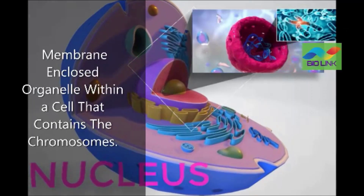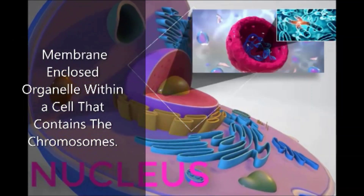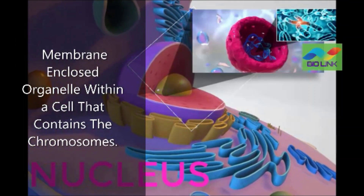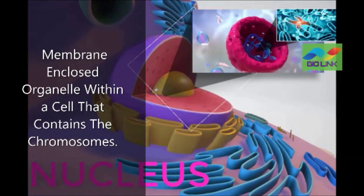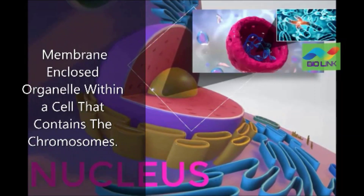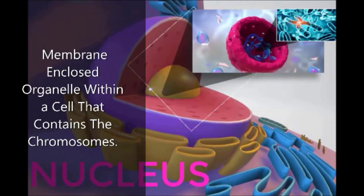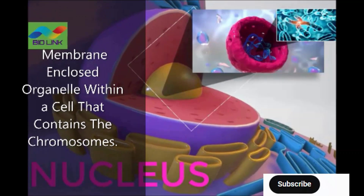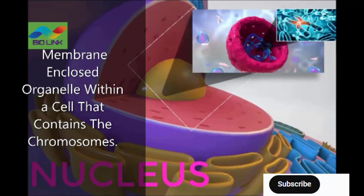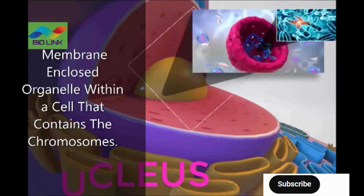Nucleus: The nucleus is a membrane-bound organelle found in eukaryotic cells. It contains chromosomes, the hereditary material DNA. The nucleus controls much of the cell's activities such as metabolism, growth, and reproduction. It is found only in eukaryotic cells and not in prokaryotic cells.